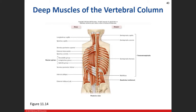Here you can see the erector spinae muscle group — the 'I love spaghetti' muscles. You only need to know it as erector spinae. They are the deepest muscle group, lying right on top of the spine and ribs. The iliocostalis group is the most lateral — named because it inserts onto some of the ribs. The spinalis group is closest to the spine. The longissimus group travels all the way up to the neck.